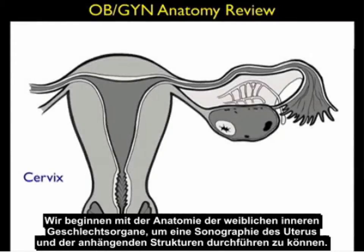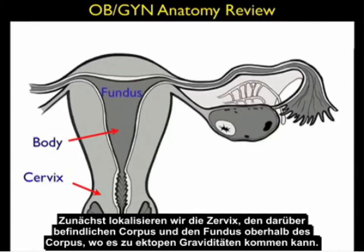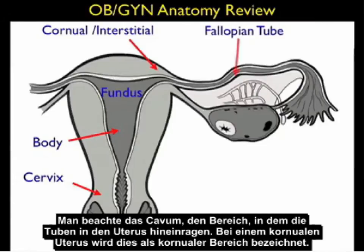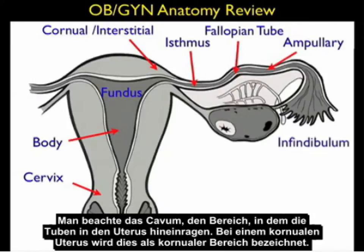Let's begin by reviewing the OB-GYN anatomy that we'll need to note to perform bedside ultrasound of the uterus and the adnexa. We'll begin by locating the lower cervical region of the uterus, the portion above that the body, and the fundal region of the uterus above the body, which is where we define an intrauterine pregnancy to be located. Notice the interstitial region of the uterus — that region that abuts the fallopian tube. In a cornuate uterus, this is known as the cornual region.